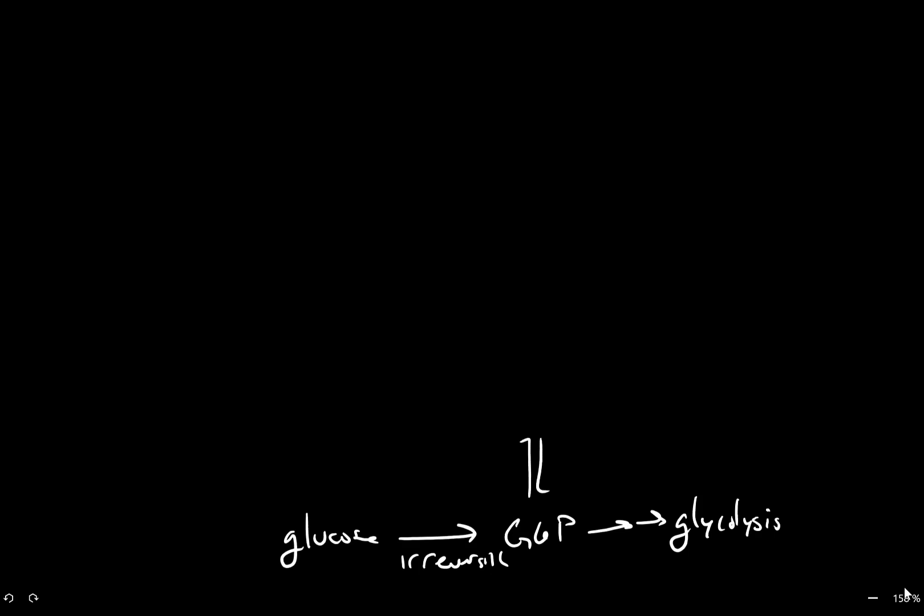The first step is a reversible conversion of glucose 6-phosphate into glucose 1-phosphate using phosphoglucomutase. Then if we are converting glucose into glycogen, the next step is the irreversible conversion of glucose 1-phosphate into UDP glucose. This consumes one equivalent of UTP and produces pyrophosphate, which is two phosphates linked together.